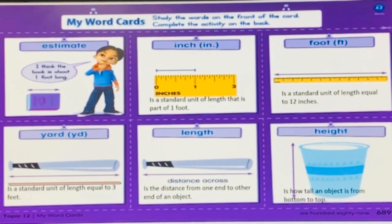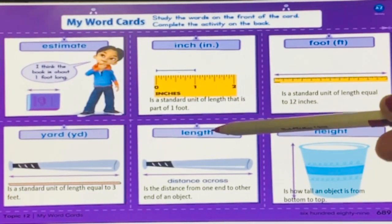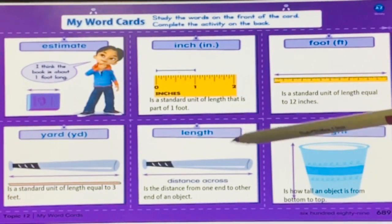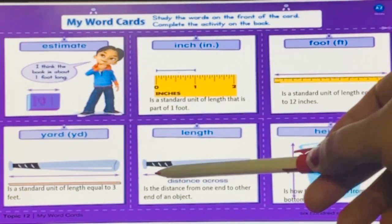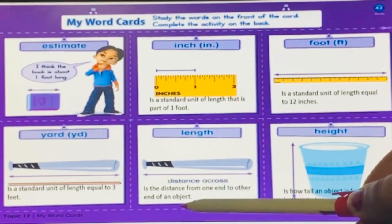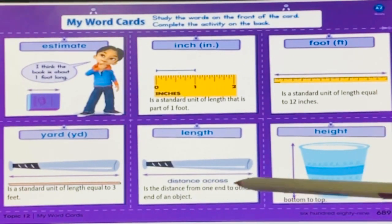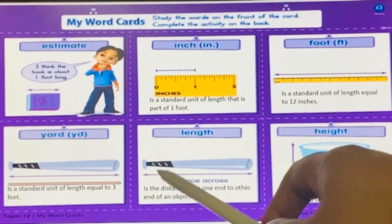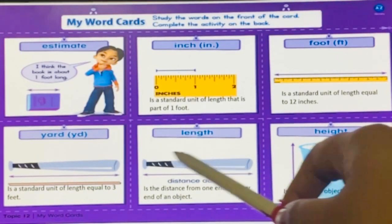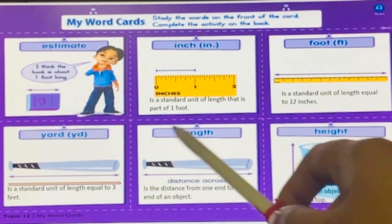Then the next word is length. Now what is the length? You can see a line in the picture. This is the distance from one end to another end of the object. When you measure any object from end to end, that is the length. From end to end.